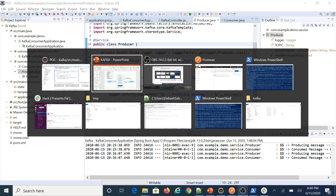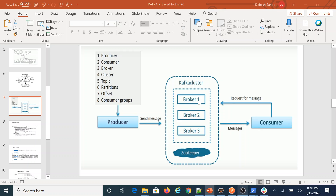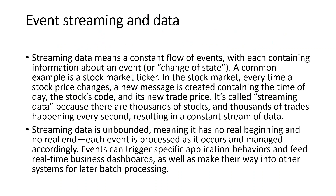So what is event streaming architecture? Streaming data means a constant flow of events, each containing information about an event or a change of state — data transferring from one place to another. A bright example is the stock market: every time a stock price changes, a new message is created containing the date, stock code, and new price. It's called streaming data because thousands of trades happen every second, resulting in a constant stream of data.